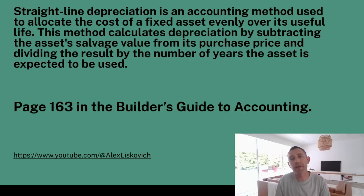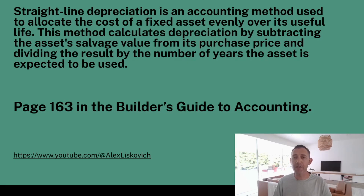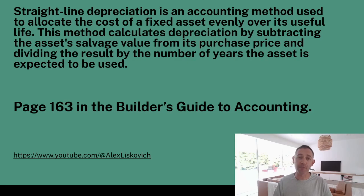What is straight-line depreciation? It's an accounting method used to allocate the cost of a fixed asset evenly over its useful life. The method calculates depreciation by subtracting the asset salvage value from its purchase price and dividing the result by the number of years the asset is expected to be used.